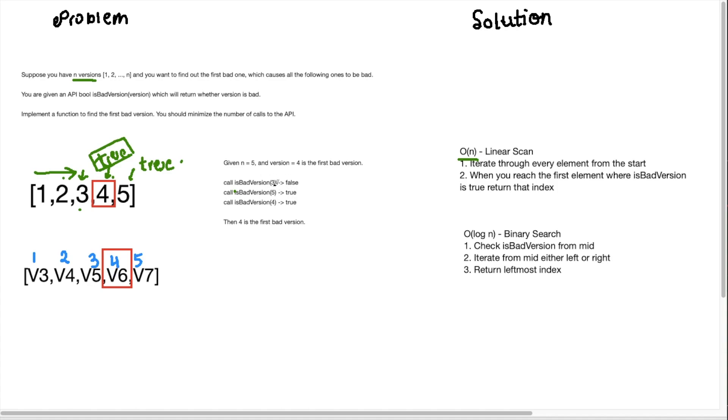So LeetCode doesn't want us to make too many calls to is bad version. And that's why we are going to use binary search to improve our time complexity and find a faster way to solve this problem. Great. So let's do a walkthrough with our example here with binary search. Here I've identified what the left is and what the right is and the reason we're starting our indexing from one is because the question says that the versions start from one here.